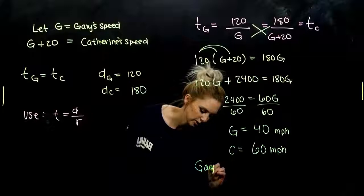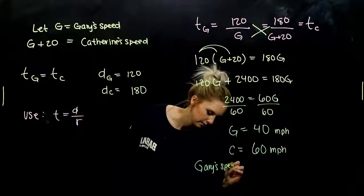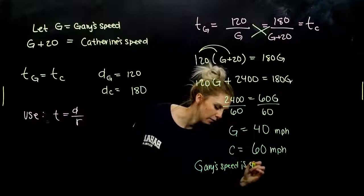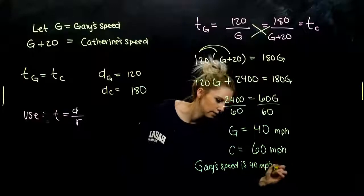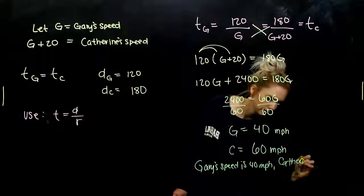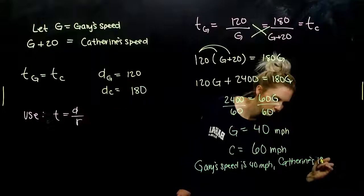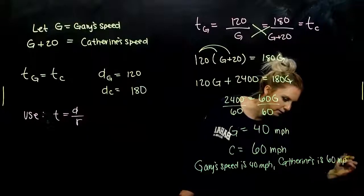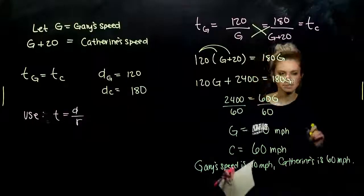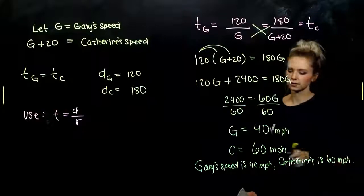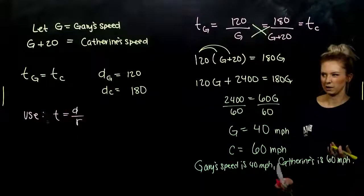So Gary's speed is 40 miles per hour. Catherine's is 60 miles per hour. Someone who is not mathematically inclined should be able to look at your answer, talk about what happened.